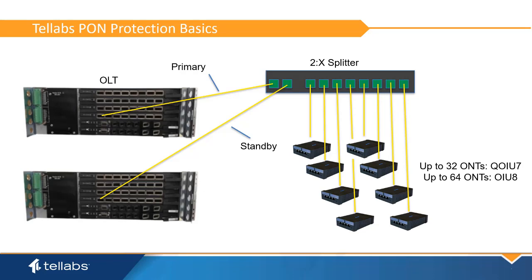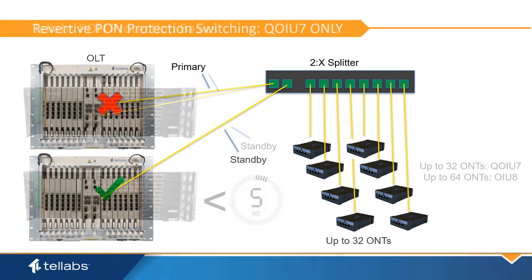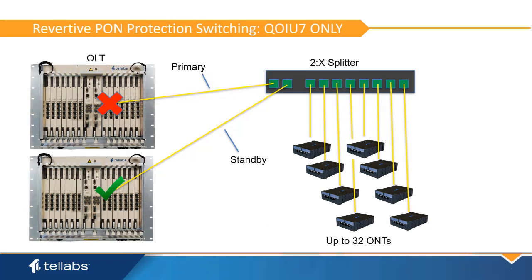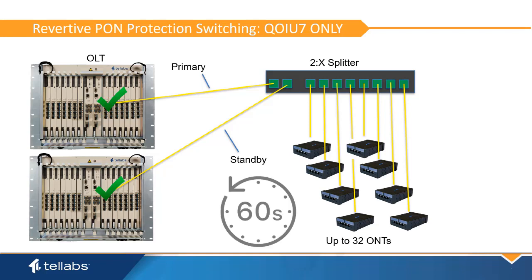Failover times are less than five seconds. It should be noted that the protection switching is revertive when using the QOIU7 PON card. This means that when the primary link returns to service, the system will switch back after the wait to restore time has expired. The default wait to restore time is 60 seconds.